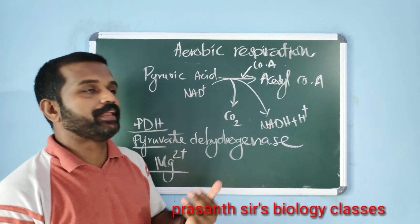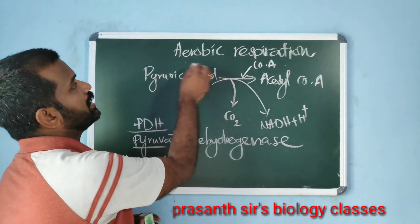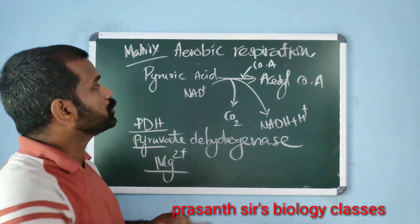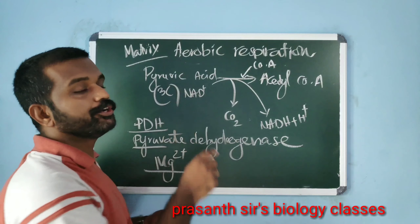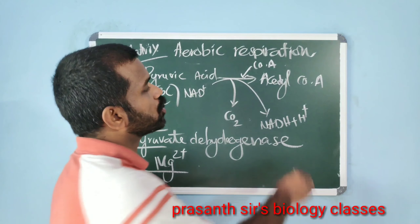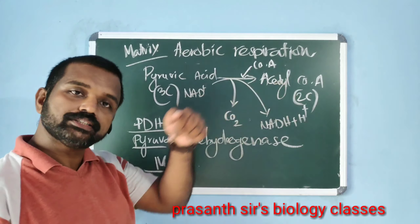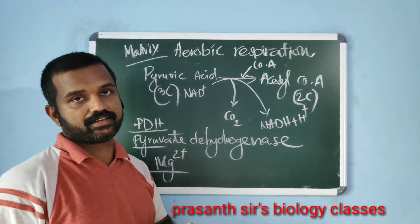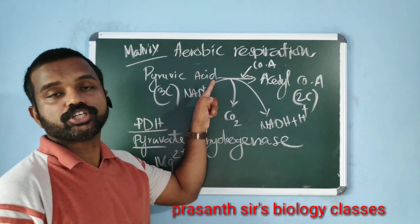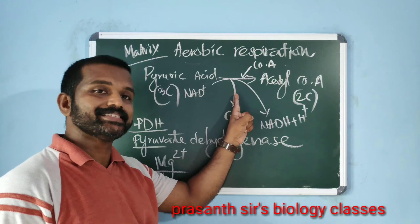For aerobic respiration, pyruvic acid first enters into the mitochondrial matrix, where the pyruvic acid, a three-carbon compound, is converted into acetyl coenzyme A, a two-carbon compound. During this conversion, oxidation occurs — the removed hydrogen is accepted by NAD⁺ and it becomes NADH + H⁺. Carbon dioxide is also removed, so decarboxylation takes place, and coenzyme A is added.